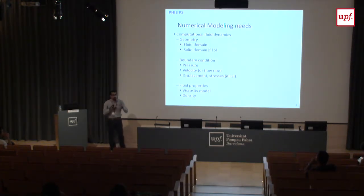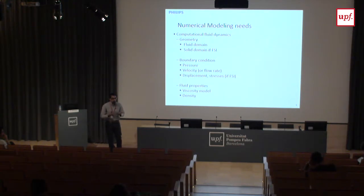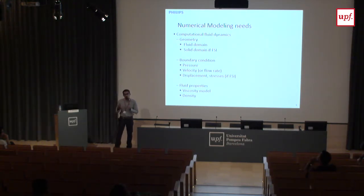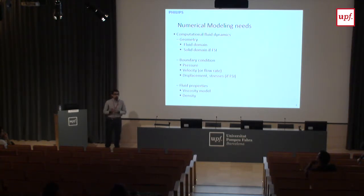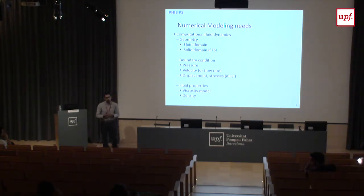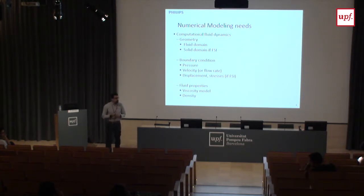The recipe for flow modeling requires defining a domain for the flow — where it moves. If we're interacting with solids, we also need the solid domain. We need boundary conditions: pressure or flow rate. Displacement or stresses if FSI is included. And fluid properties — whether I consider blood as a Newtonian or non-Newtonian fluid, and density.